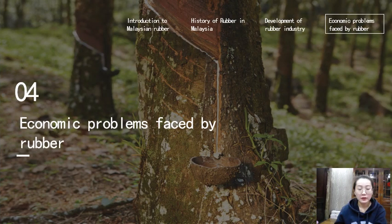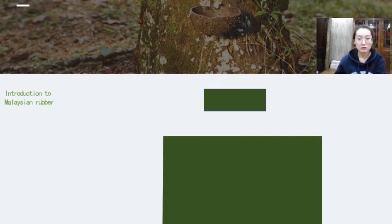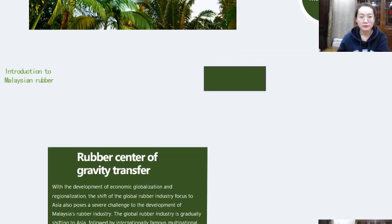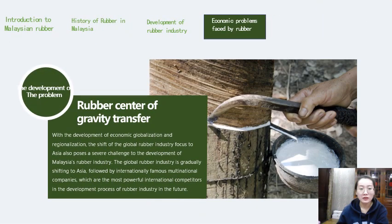Let's see the economic problems faced by rubber. Problem 1: Rubber yields fall. Malaysia's natural rubber output and exports have all been declining since 2006. The main reason is that the yield of rubber cultivation is not as good as that of other cash crops such as palm trees. Problem 2: Rubber center of gravity transfer. With the development of economic globalization and regionalization, the shift of the global rubber industry focus to Southeast Asia also poses several challenges to the development of Malaysia's rubber industry.